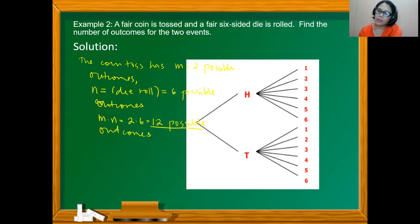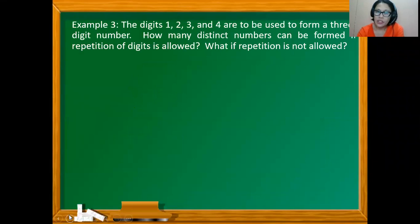In order to determine the number of outcomes of an event that occurs independently, such as the selection of a number, one must know whether repetitions are allowed. For example, the digits 1, 2, 3, and 4 are to be used to form a three-digit number. How many distinct numbers can be formed if repetition of digits is allowed? How about if repetition is not allowed?